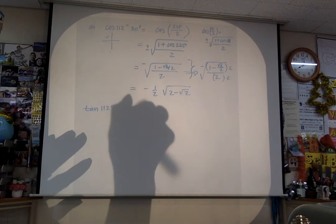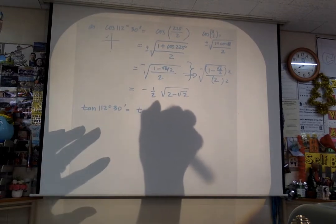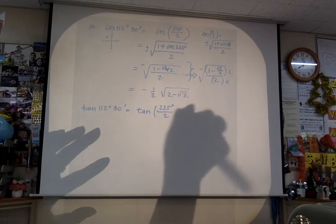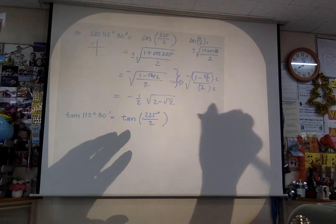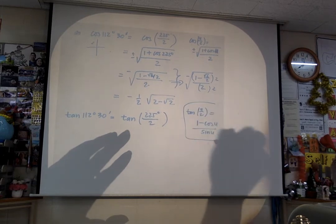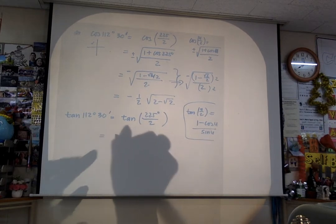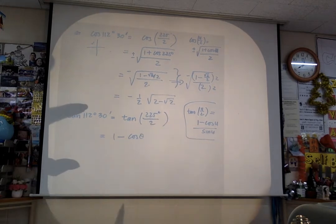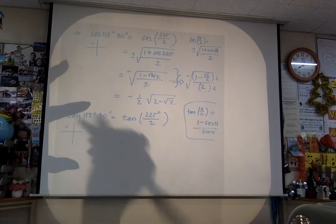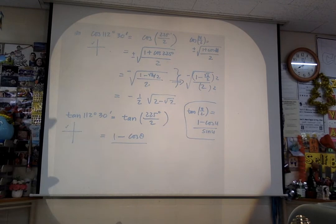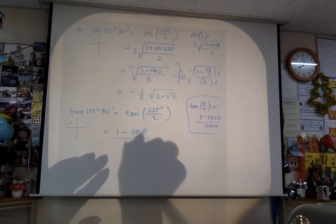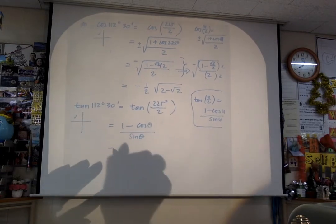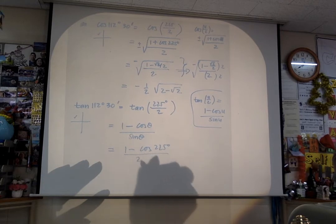Why don't you try tangent of 112 degrees and 30 minutes on your own — stop the video and come back when you're ready. Tangent half-angle formula: tangent of u over 2 equals 1 minus cosine u, all over sine u. This is the most interesting one because it doesn't look like the other formulas. So rewrite it as 1 minus cosine 225 all over sine 225.